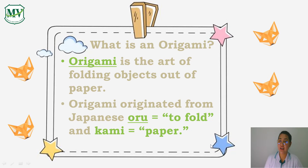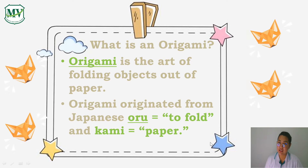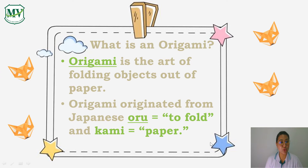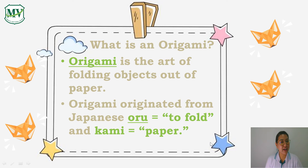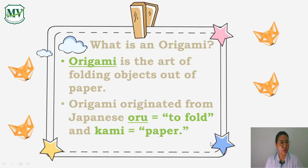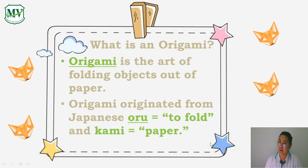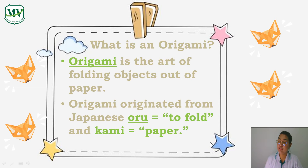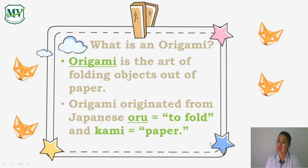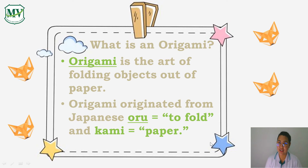Origami is originated from Japanese 'oru,' which means 'to fold,' and 'kami,' which means 'paper.' So again, origami is an art where we fold paper to form objects, animals, or anything.